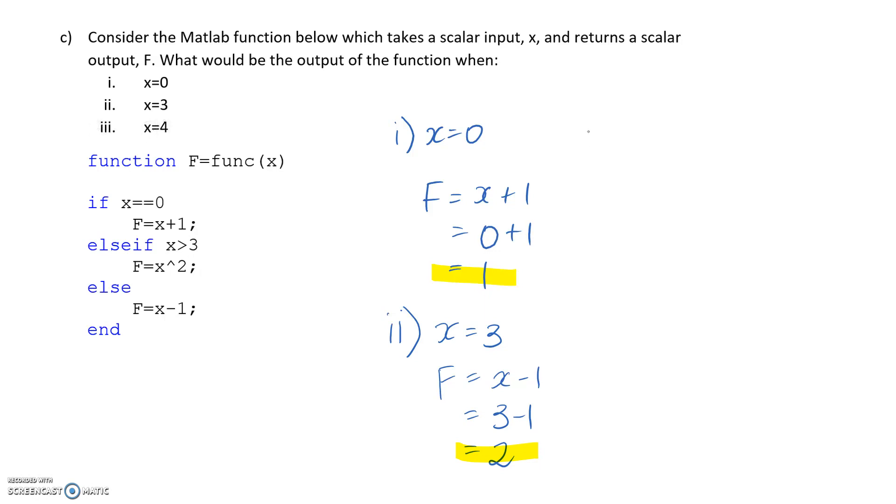The last one, part 3. We've got X is equal to 4. So we come in. We see this if command and we say, X is not equal to 0. So we're going to keep going. We have this else if. This time, we have 4 is greater than 3. So this is going to be true. So that means we now execute this line here. So F is going to be equal to X squared. So 4 squared, which is 16. So that's what would be outputted for that line.